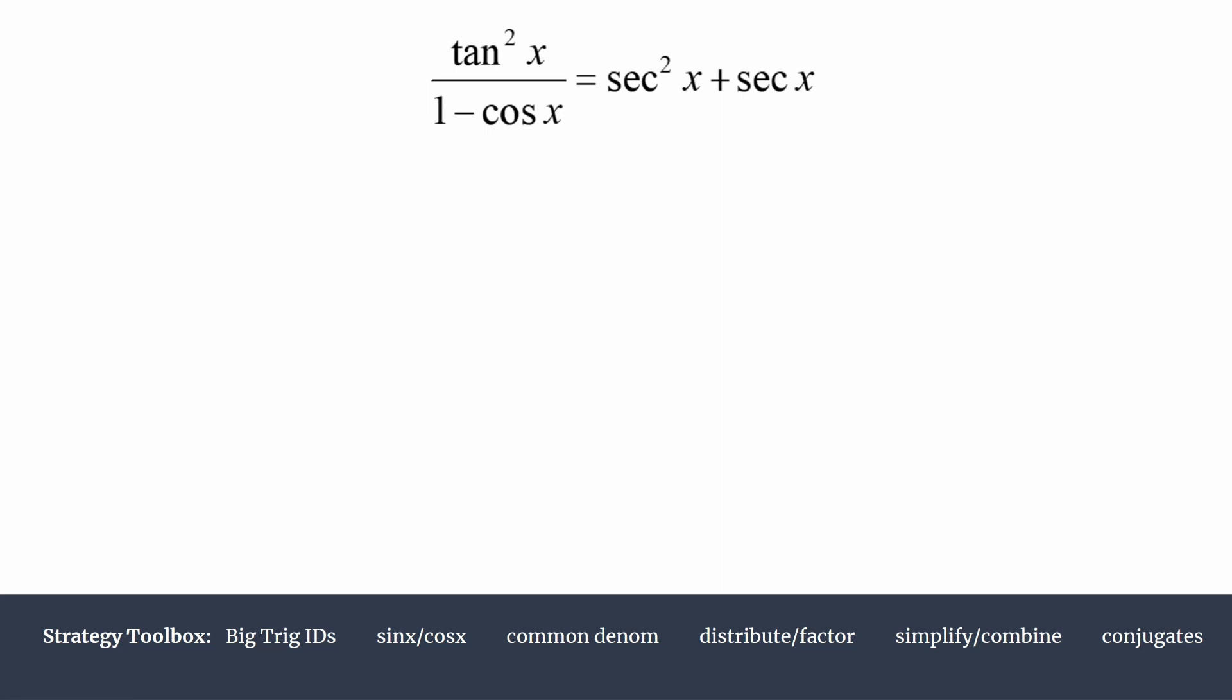So let's draw that vertical bar. We won't be tempted to work on the right hand side at all. Let's start by multiplying by the conjugate: 1 plus cosine x over 1 plus cosine x.